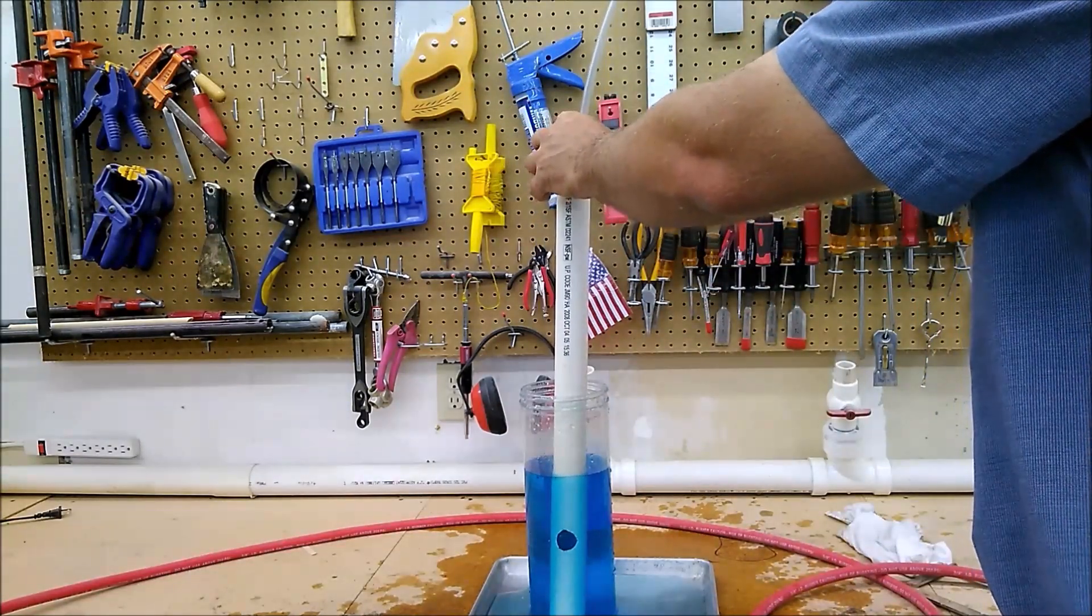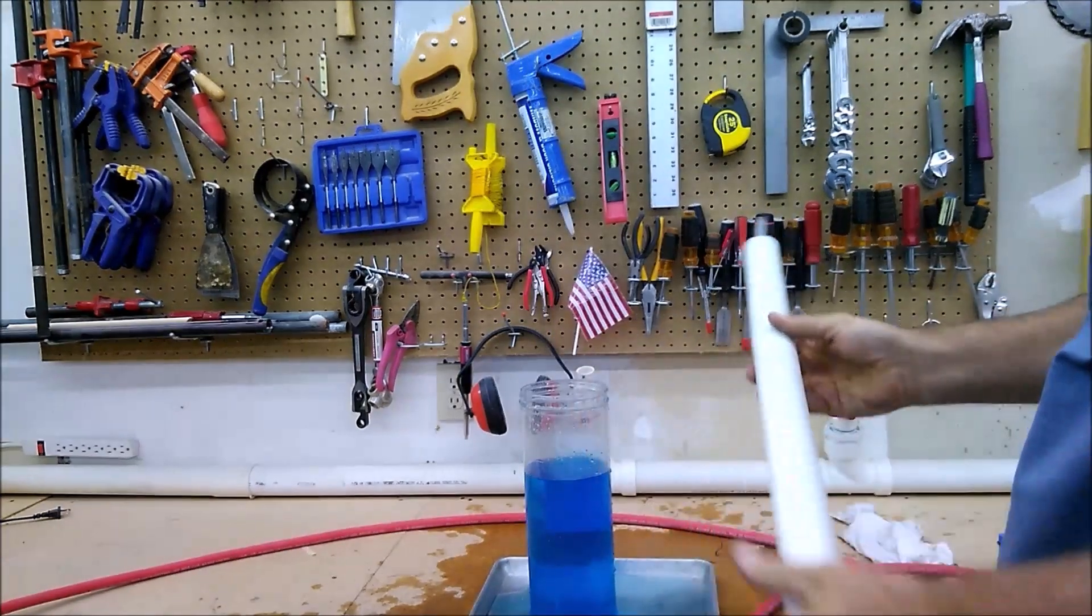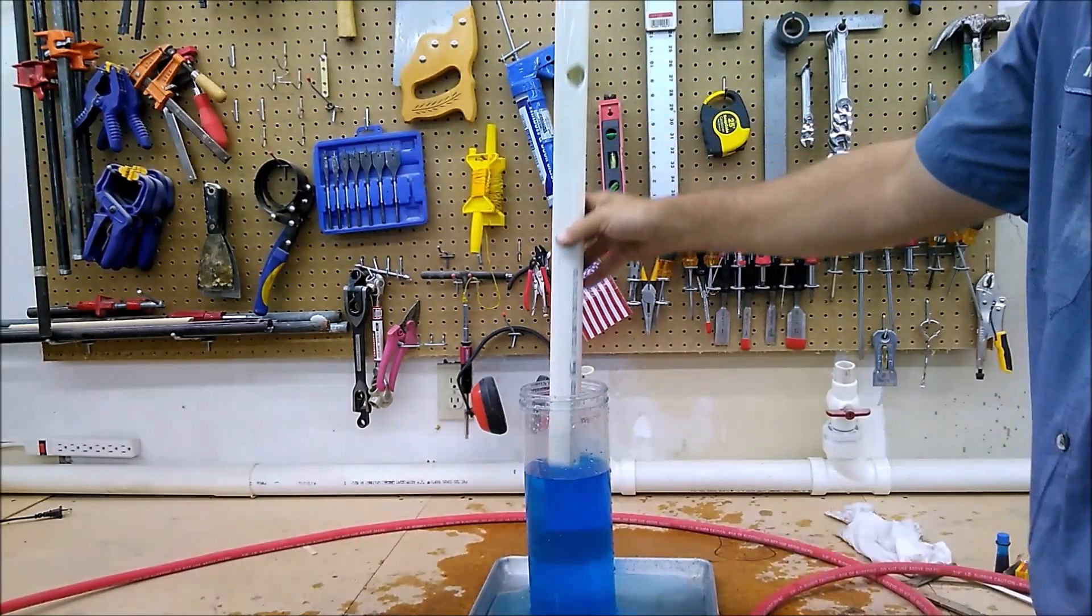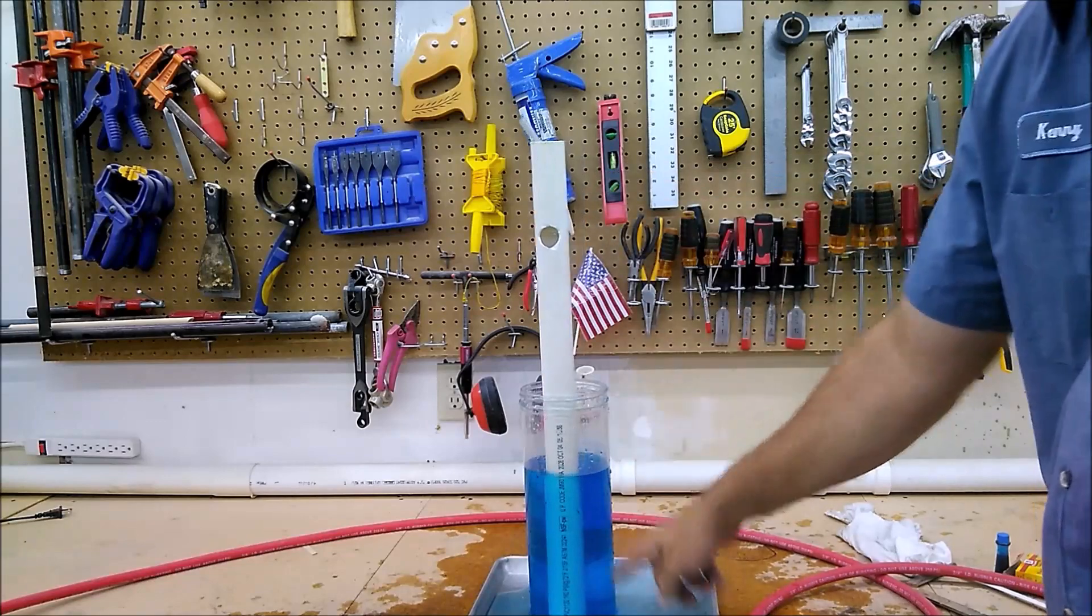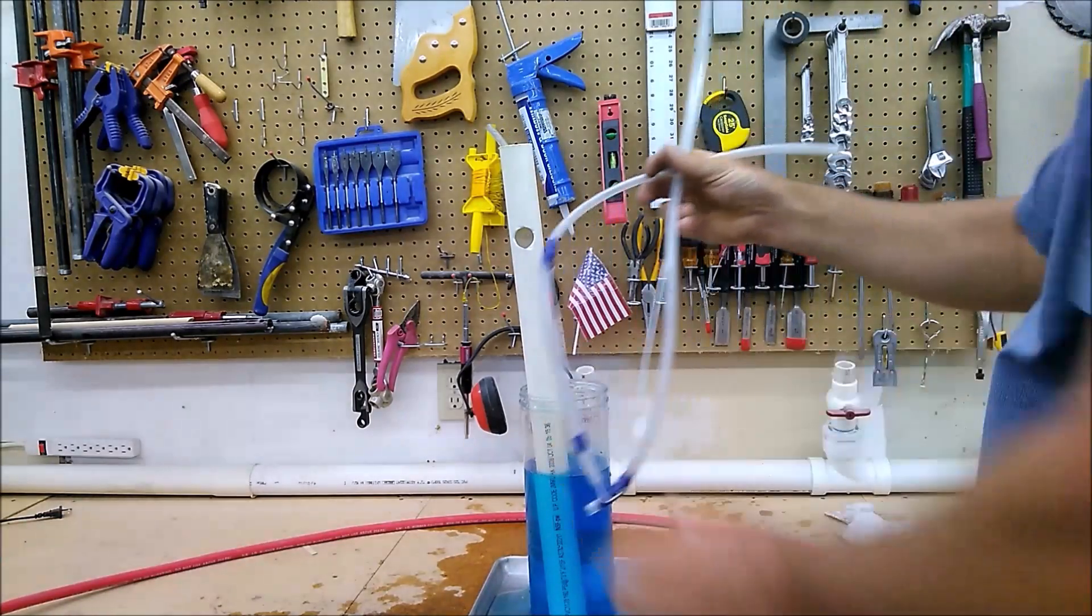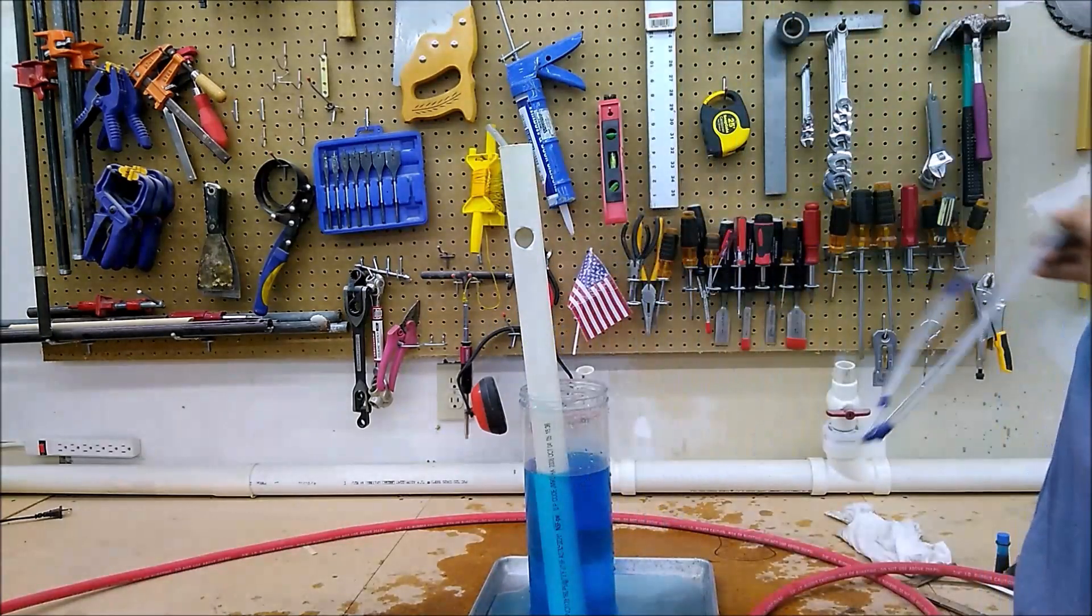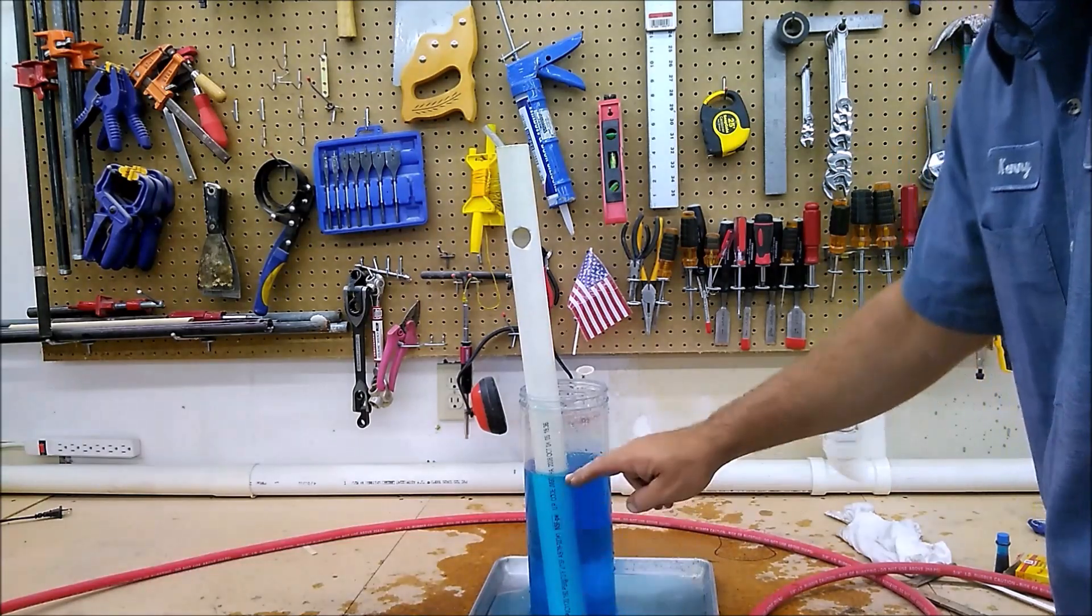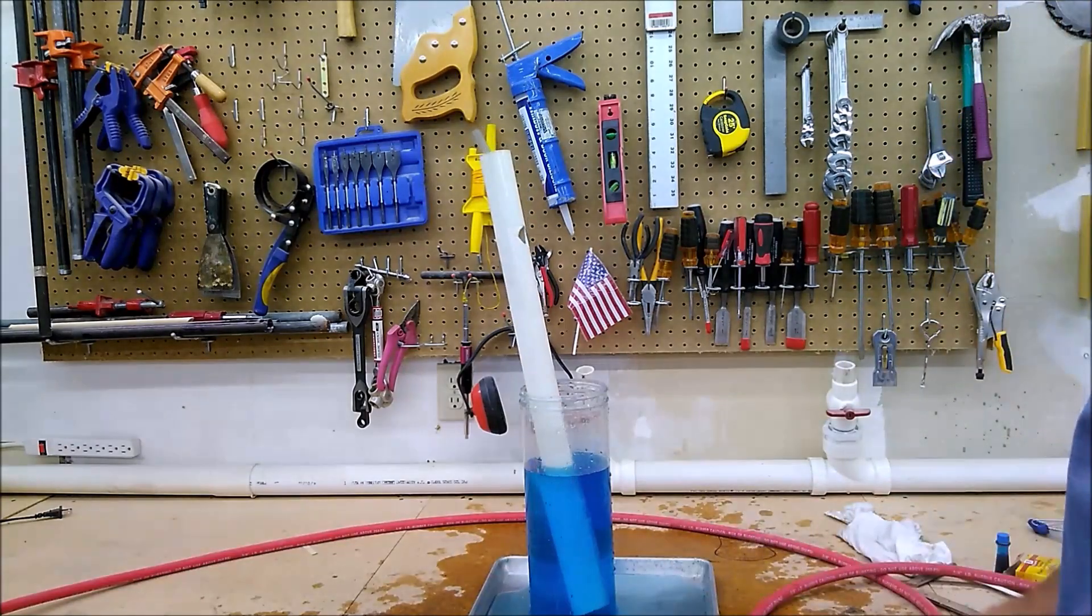One solution to that, if we consider this to be our casing again, is to run a second line all the way to the bottom. And you're essentially making a two-pipe system just like this one, only you're doing it with one pipe inside of the other. Then your total head available is clear to the bottom of the hole instead of being up where your perforations are.